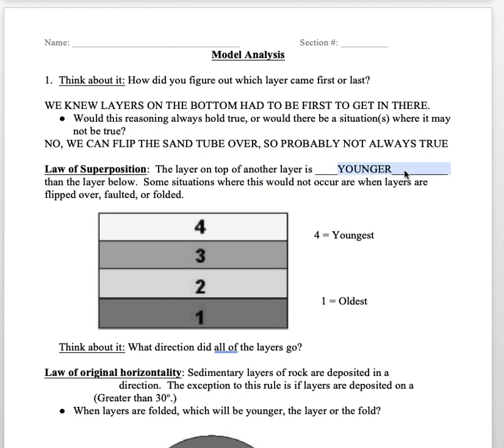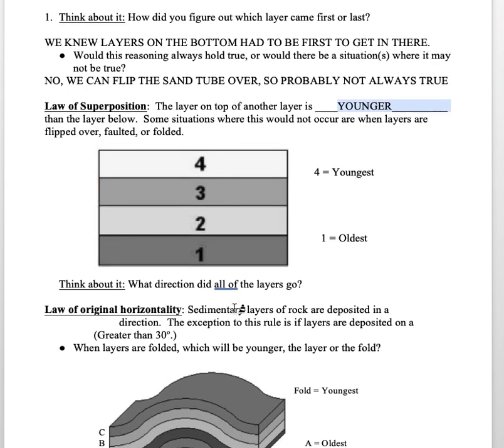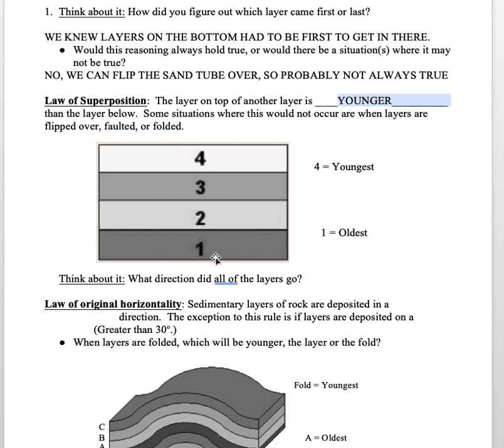This idea that you guys had already figured out from our puzzle is called the law of superposition. You're probably going to want to star or mark that one because this one's really your bread and butter, the one we use most often. The layer on top of another layer is always younger than the layer below it. If we look at a layer like this, we can see layer one had to come first, then layer two, then three, then four.